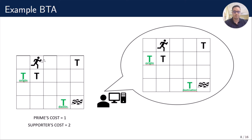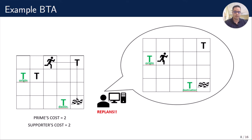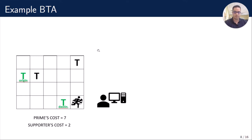Now it's Prime's turn again. This action has opened an opportunity for Prime, so it can reuse the previous optimal plan and execute the next action. Supporter replans again, and so on. At the end, Prime reached the goal with the same cost as without Supporter, but with a Supporter total cost equal to 2.